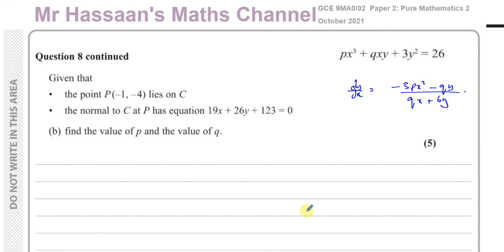Now for part b, it says, given that the point P, the point P, which has got the coordinates (-1, -4), lies on the curve C. So that's, and the normal to C at P has this equation, 19x + 26y + 123 = 0. Find the value of p and q. Okay, so we can make two equations, one from each of these. Now if the point P lies on the curve C, it satisfies the equation of the line, the curve C. So that means when x equals -1 and when y equals -4, this equation is satisfied.